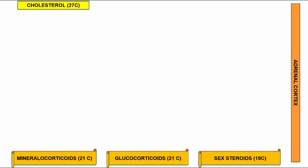Mineralocorticoids mainly have effects on salt and water regulation, while glucocorticoids mainly have effects on glucose and protein metabolism. In the left column we will look at the synthesis of mineralocorticoids, in the middle column the synthesis of glucocorticoids, and on the extreme right the synthesis of androgen precursors.